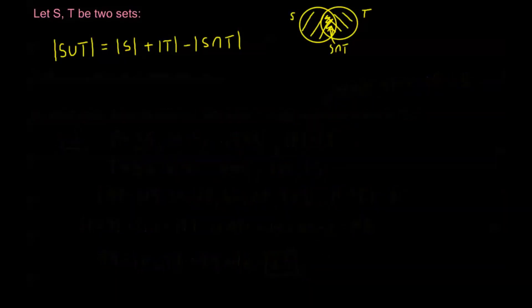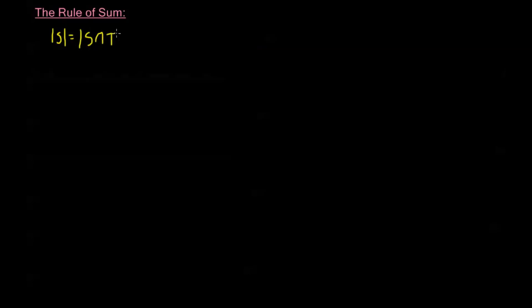We can use this to come up with another formula using what's called the rule of sum. The rule of sum states that the order of a set S equals the order of S intersected with some other set T, plus the order of S minus T. We're counting all elements in S by counting those also in T and adding those not in T — every element in S is either in T or not in T.